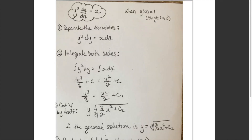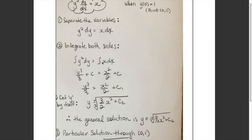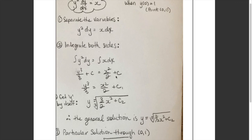Here's the original differential equation; we want the particular solution through (0, 1). Step one — separate the variables: I bring the dx up, giving y squared dy equals x dx, with all y's on one side and x's on the other. Step two — integrate both sides: the integral of y squared dy is y cubed over 3 plus c, and the integral of x dx is x squared over 2 plus c. Combining the constants gives y cubed over 3 equals x squared over 2 plus c.